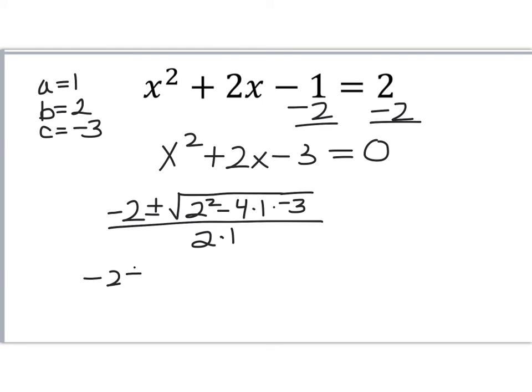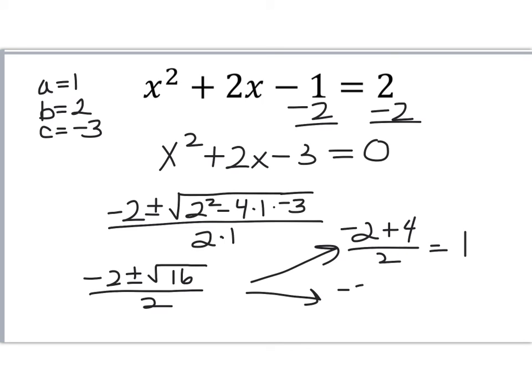So I'm going to do negative 2 plus or minus, and that actually becomes a 16 all over a 2. So now I'm going to split off my plus or minus, and I say negative 2 plus the square root of 16 is 4 all over 2, and that is going to be, let's see, 2 over 2 is a 1. And then the other one, I'm going to do the minus, and minus 4 all over 2. That is a negative 6 divided by 2, which is a negative 3. So there are your answers, 1 and negative 3. All right, now, go and have some fun.